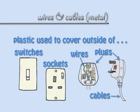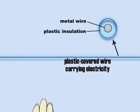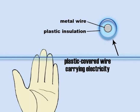That is why metals are used to make electric wires and cables, and plastics are used to cover the outside of wires, plugs, and switches. That way, when you touch them, you are insulated from the risk of an electric shock.